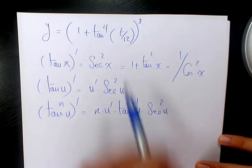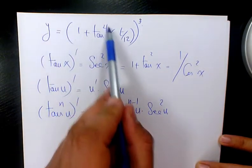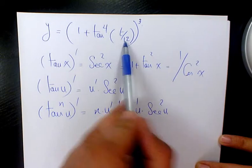Now, let's solve this question. y equals 1 plus tan to the power of 4 of t over 12 to the power of 3.